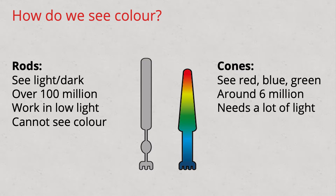If we see green light, green-detecting cones send the message green. However, if we see yellow, there is no corresponding yellow-detecting cone — we've only got red, blue and green. Since yellow is a little bit like red and a little bit like green, it fires both the red and green cones at once. When our brain receives the signal, it knows to interpret this colour as yellow. And this is why TV screens and computer monitors use RGB to create the full spectrum of colour.